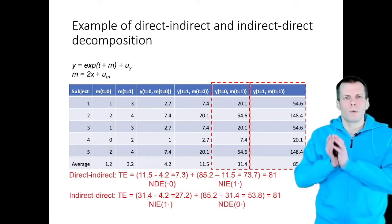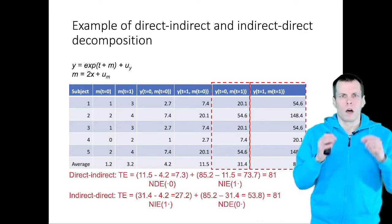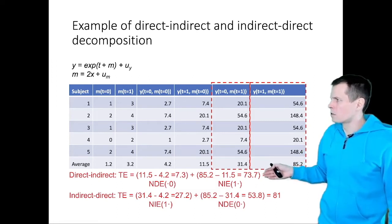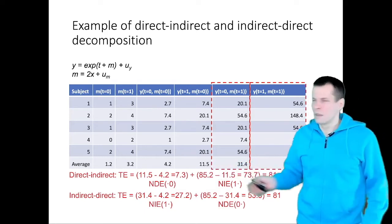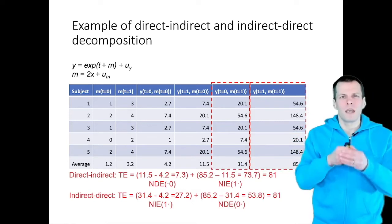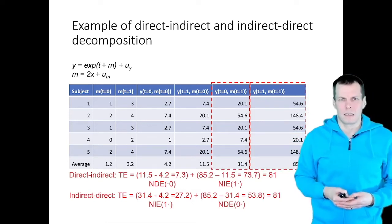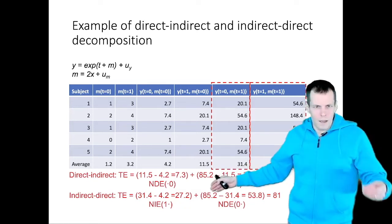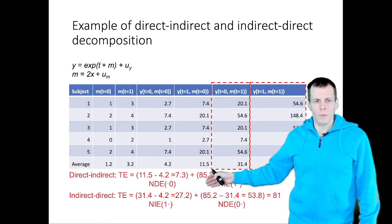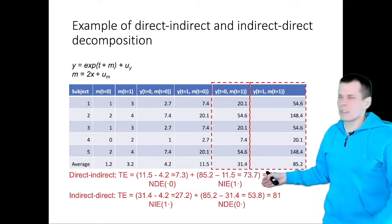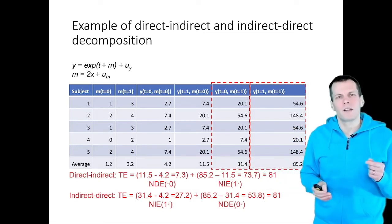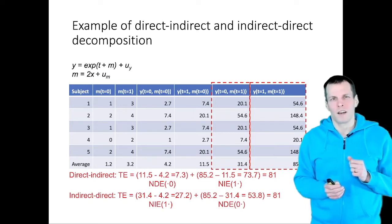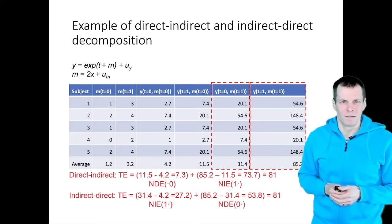Quite often we want to compare the magnitudes of these two effects — how large a share of the total effect is mediated. Based on the first decomposition, the mediation effect is about 10 times as large as the direct effect. But in the second decomposition, the natural indirect effect of 27.2 is actually just half the natural direct effect of 53.8. So is the mediator effect 10 times stronger than the direct effect, or half of it? That is a 20-fold difference between the two answers.